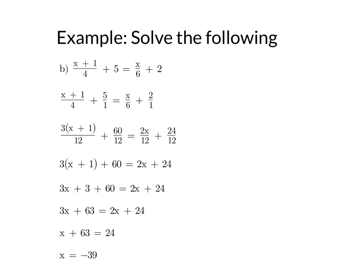Expand the brackets, 3x plus 3 plus 60 equals 2x plus 24. Then we collect like terms, so 3x plus 63 equals 2x plus 24.